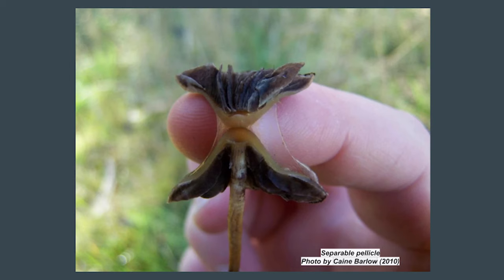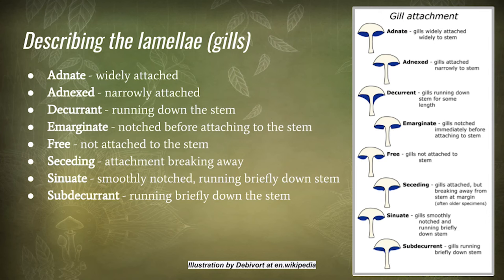Caps can also have other features. Some species have a separable pellicle, or they're hygrophanous — meaning the cap will change colour over time. The separable pellicle is like a thin gelatinous layer on top of the cap; when you break the cap and gently peel it apart, you find this beautiful gelatinous layer. There are also terms for describing the lamellae and how they attach to the stem: adnate, adnexed, decurrent — meaning running down the stem — free, not attached to the stem at all, seceding, sinuate decurrent, and so on.